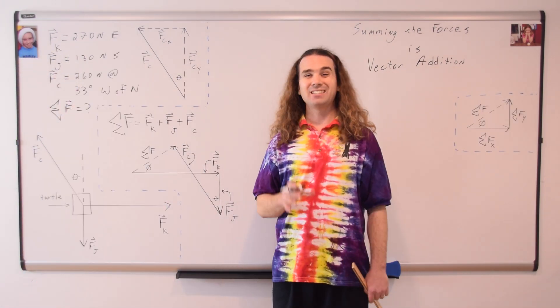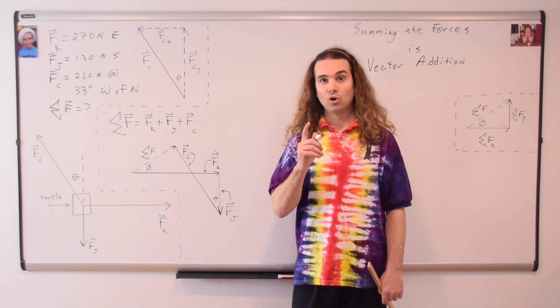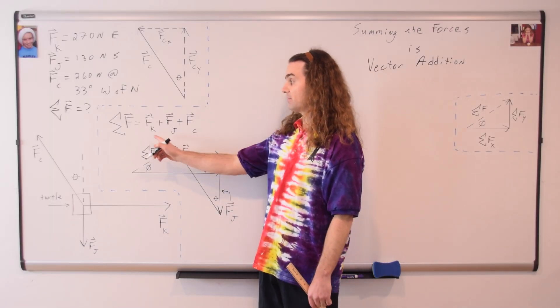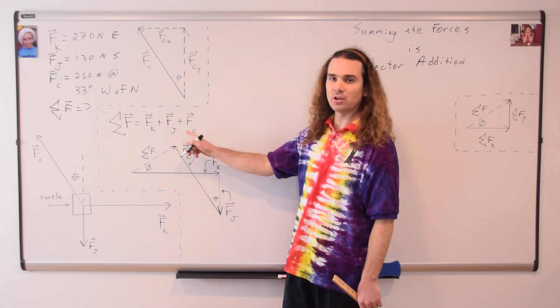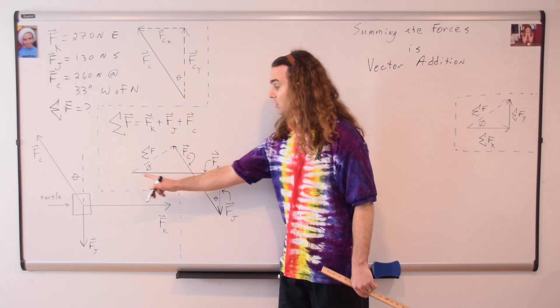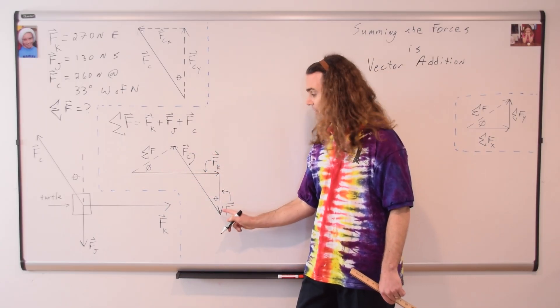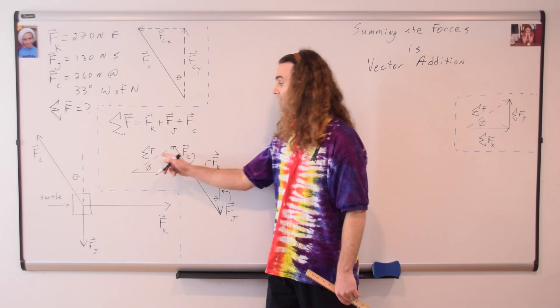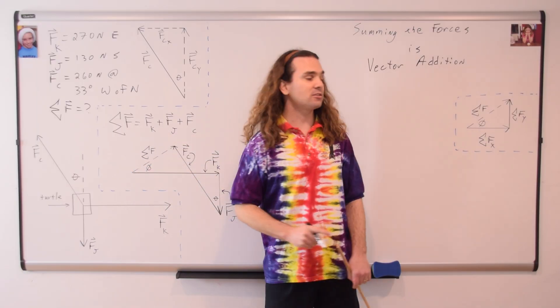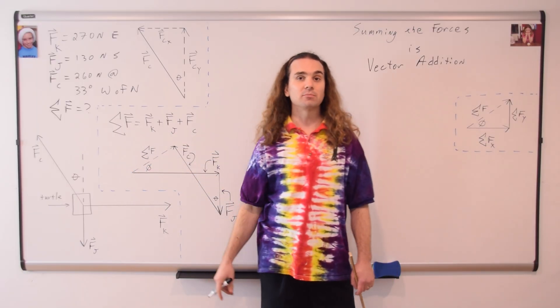Summing the forces is vector addition. For example, we can do tip to tail vector addition of the force of Ken plus the force of Jim plus the force of Chris. The force of Ken plus the force of Jim plus the force of Chris gives us the same net force vector we got when we summed the forces.